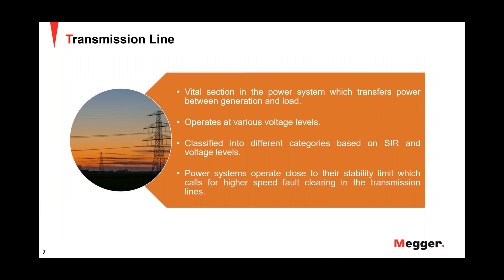Transmission lines are an important section in power systems where transfer of power takes place between generation and load, and they operate at various voltage levels. Transmission lines can be classified based on source-to-line impedance ratio and voltage levels — short, medium, and long lines. Power systems operate close to their stability limit, so disturbances occur within a millisecond or less, meaning the protection system should recognize and clear faults as soon as possible.